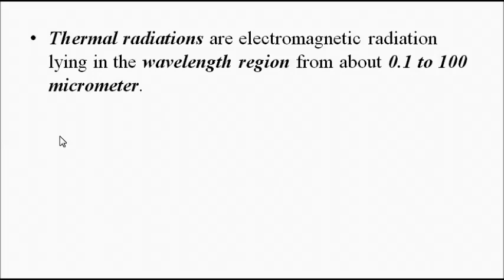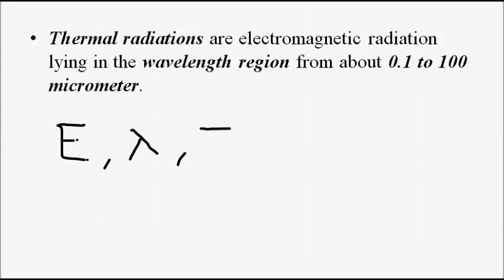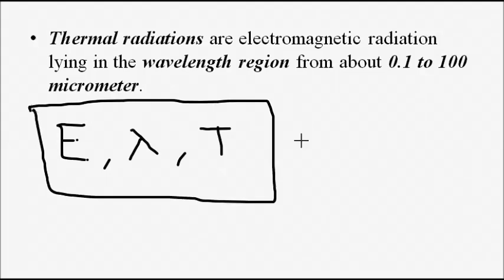When it comes to pyrometers, there are three important things as already discussed in the previous video on operating principles. When it comes to thermal radiation measurement, we are particularly interested in three important things. First is the energy of the radiation. Next is the wavelength — the wavelength at which the peak or maximum energy radiation is occurring. And the third and most important thing, around which the whole discussion revolves, is temperature — the temperature of the radiation. These three parameters are important when it comes to measurement of thermal radiations.